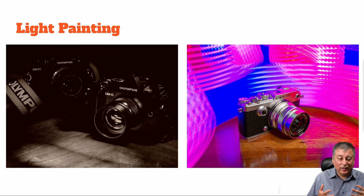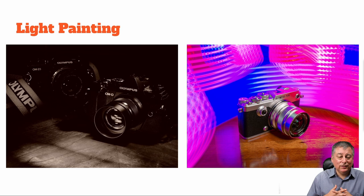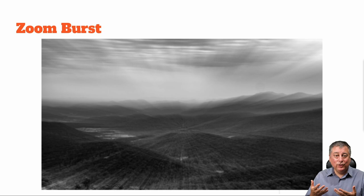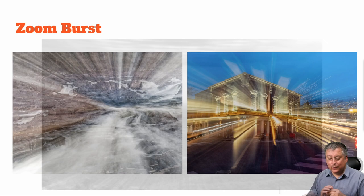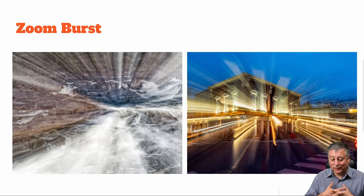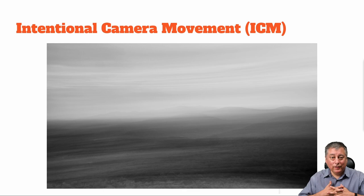Another thing you can do with long exposure photography is light painting. The image on the left is about a 10 or 15-second exposure where I was popping a flash on different parts of the camera and the table to generate the image. The image on the right used an LED light that I moved around the camera for about 10 to 15 seconds to create the effect. Zoom burst is a technique where you use a zoom lens to zoom in and out while the shutter is open. Here are two examples — a waterfall and a city in Alexandria. Just before pressing the shutter, start zooming, push the button, then stop. It takes a little practice but produces really cool effects.